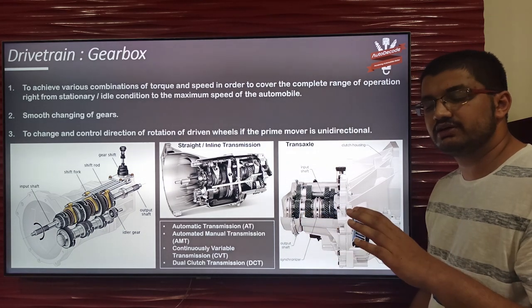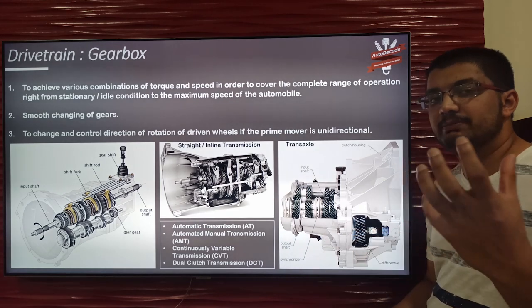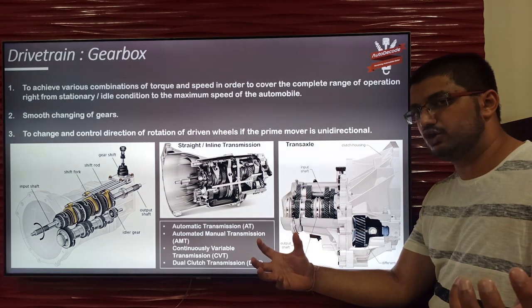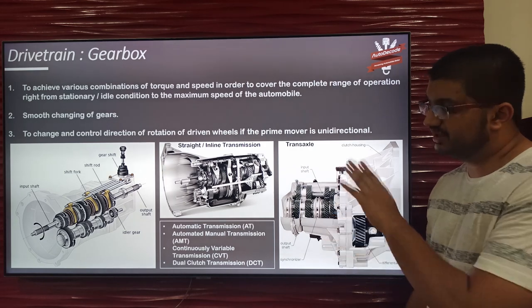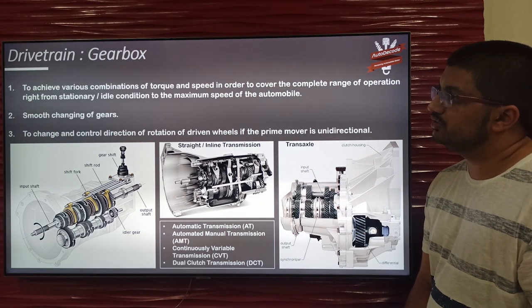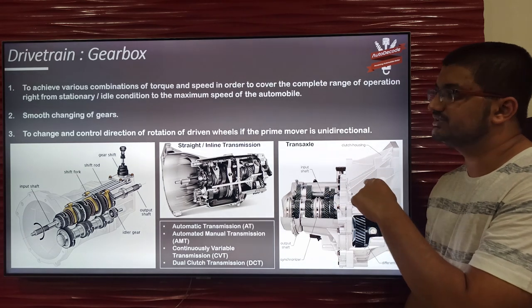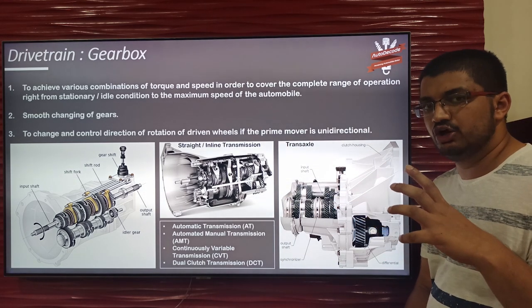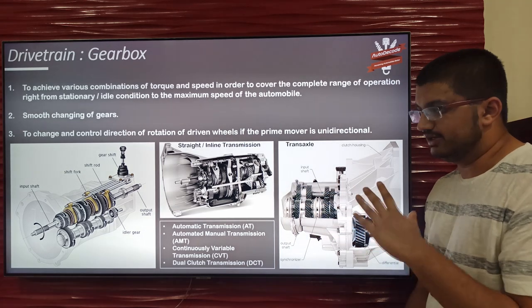Gear ratios are different set points — different ratios between the prime mover speed and torque and the driven wheel speed and torque. This is achieved by the gearbox. In order to cover various conditions, the gearbox gives various possible set points of torque and speed to achieve all the scenarios.